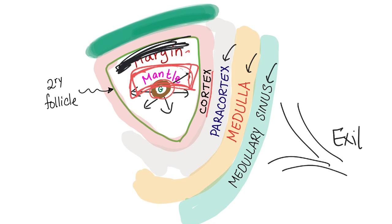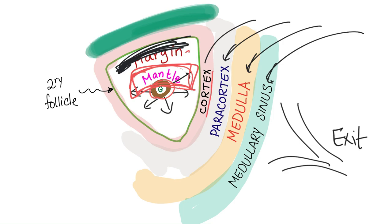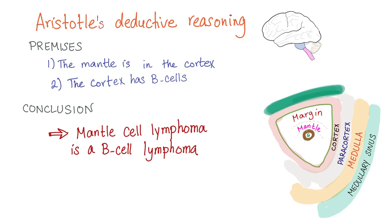The cortex has B cells; the paracortex has T cells. The medulla has plasma cells, and the medullary sinuses have macrophages. Using deductive reasoning: since the mantle is in the cortex of the lymph node, and since the cortex has B lymphocytes — therefore, mantle cell lymphoma is a B-cell lymphoma.